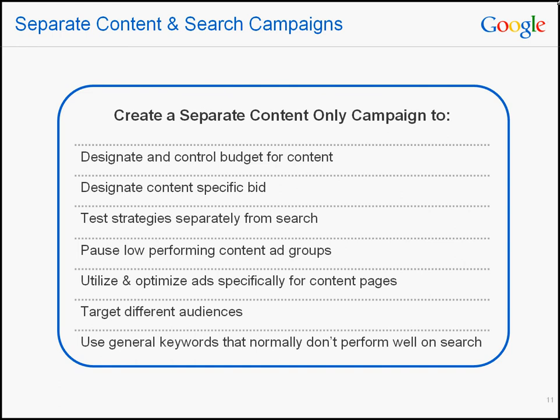For advertisers who are open to having a separate content campaign, here are some advantages: you'll have better control over your spend on the content network because you can set separate budgets and bids; you can test different strategies from search, for example targeting a specific audience; you can pause low-performing content ad groups; you can optimise ads specifically for the content pages; and lastly, you can use general keywords that may not be working well on search but will do better on content, including keywords that are inactive or may have a high CPC on search but are relevant to your product or service.